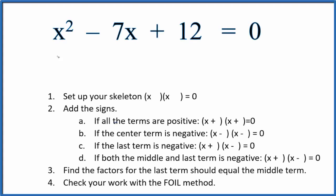In this video we'll factor the equation x squared minus 7x plus 12 equals 0, and we'll use these guidelines to help us. The first thing we want to do is set up a skeleton equation that'll look like this. Once we have our skeleton equation, we can add the signs to the equation.